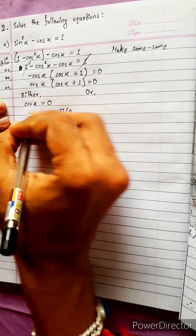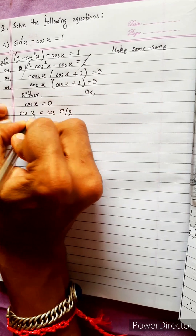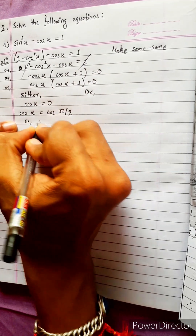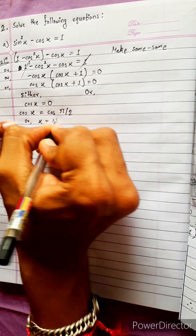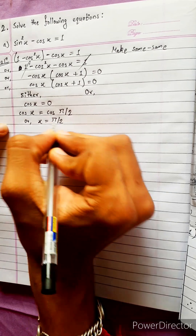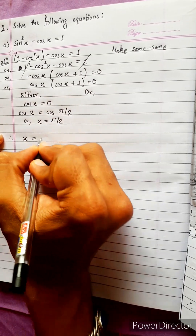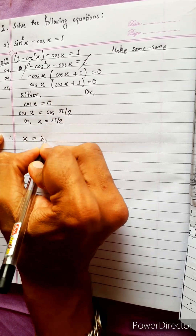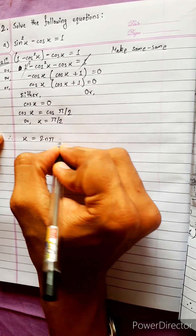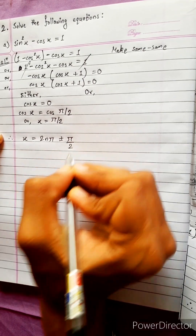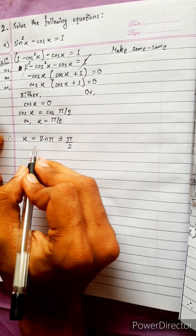So x equals pi by 2, or x equals 2nπ plus or minus pi by 2. This is the cos formula.